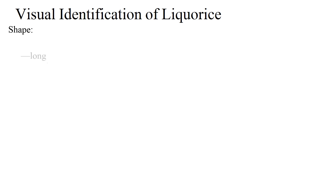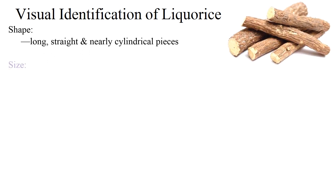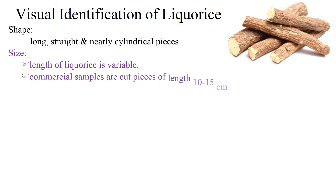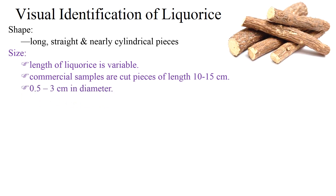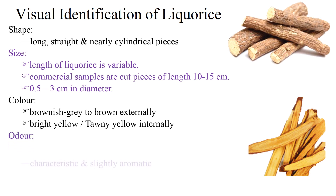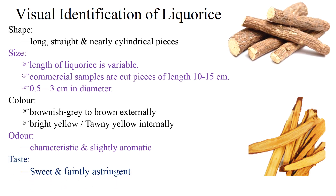Visual identification of liquirice. Shape: liquirice occurs as long, straight and nearly cylindrical pieces. Size: the length is variable; commercial samples are cut pieces of length 10 to 15 cm and diameter 0.5 to 3 cm. Color: liquirice is non-scraped to brown externally and bright yellow internally. It has a characteristic and slightly aromatic odor, and a sweet and faintly astringent taste.